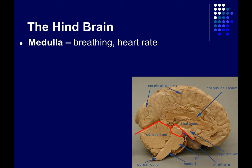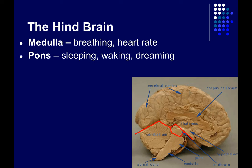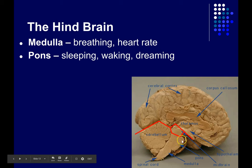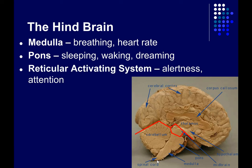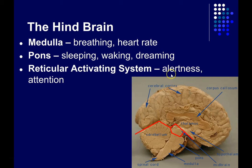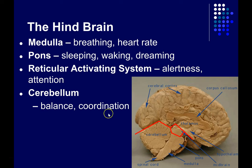The medulla is important for regulating breathing and heart rate. The pons is important for regulating sleeping, waking, and starting the REM cycle. Both also contain large white matter tracts carrying axons between the spinal cord and the brain. Running along inside the pons and medulla is the reticular activating system, which is important for regulating your level of alertness, attention, and arousal. The cerebellum is important for balance and coordination, though its role in information processing is much more complicated and nuanced.